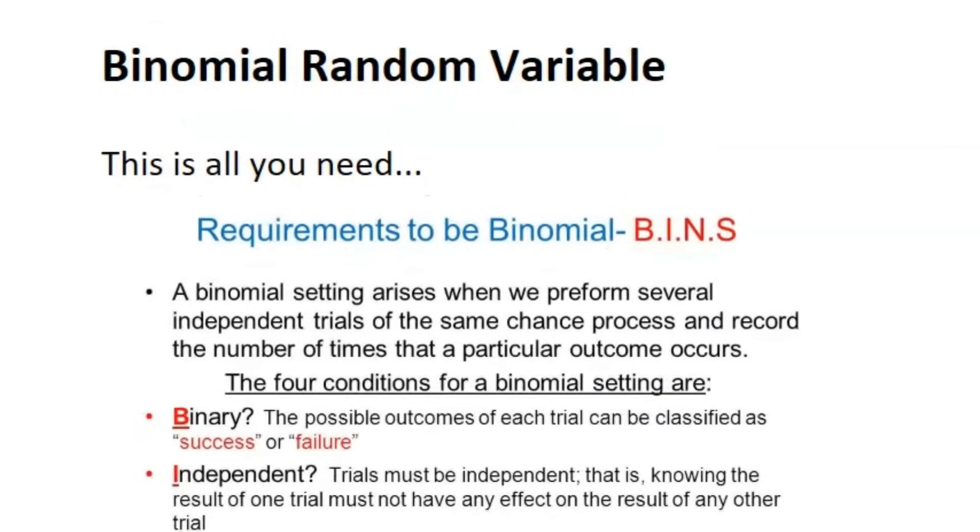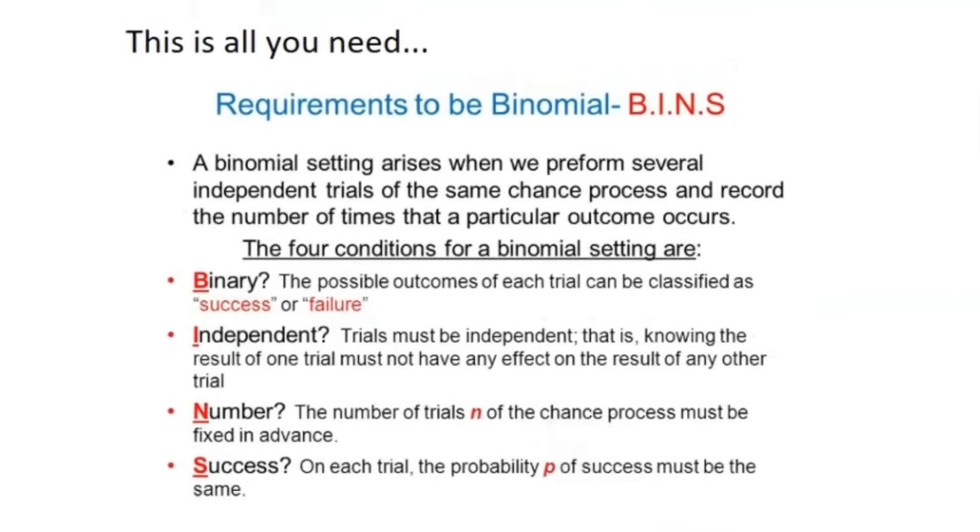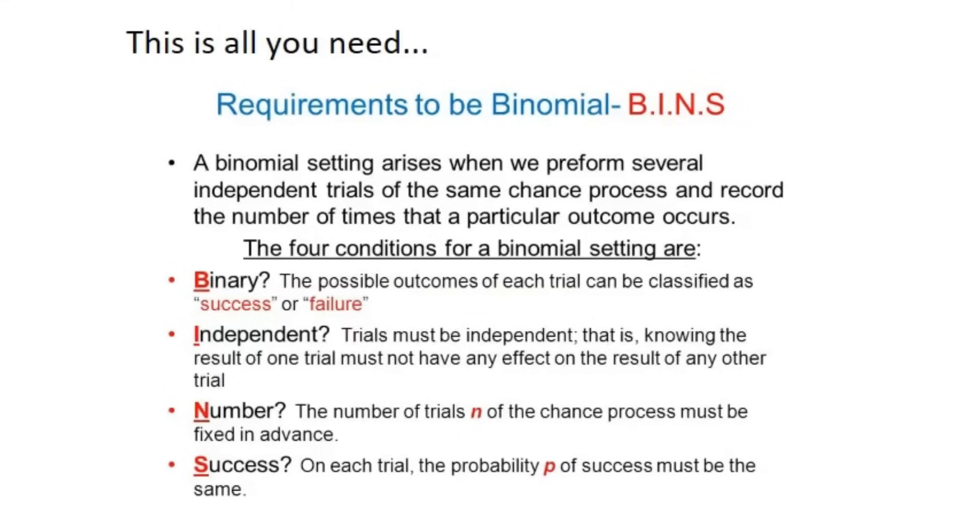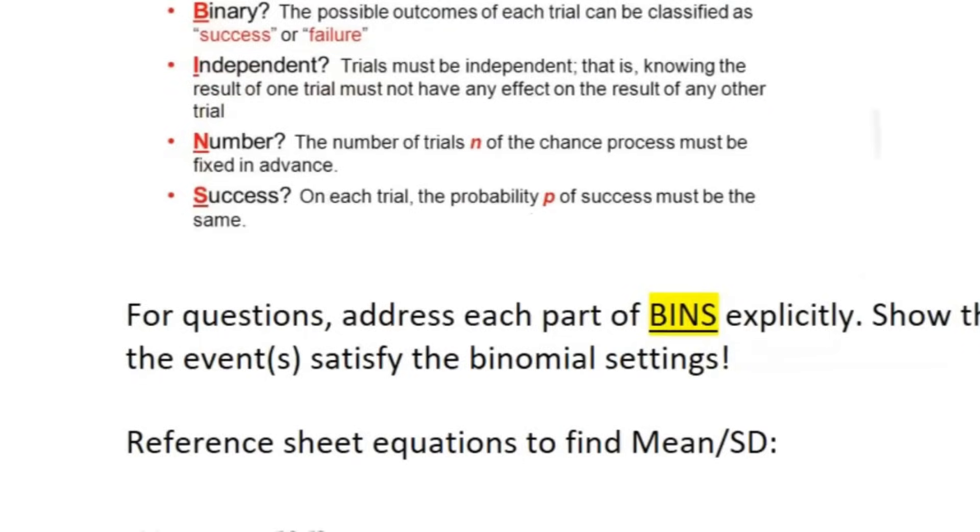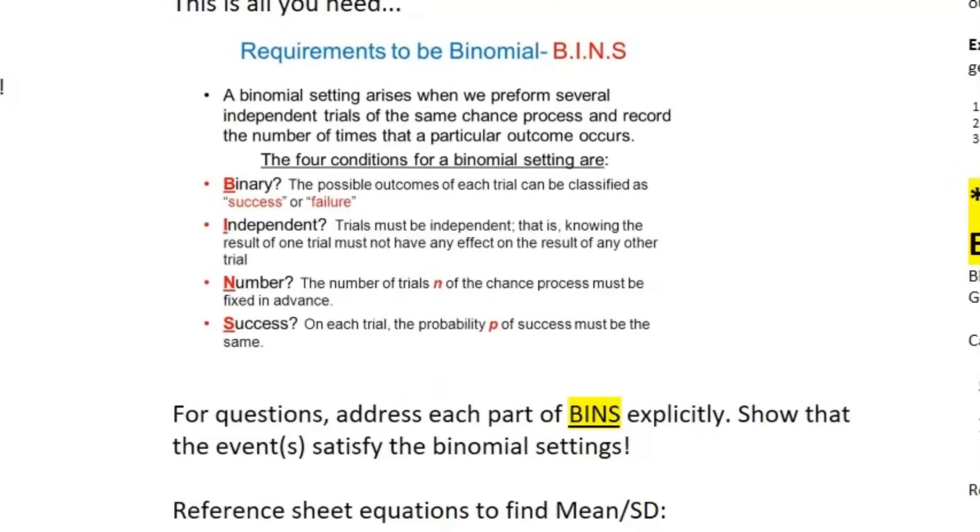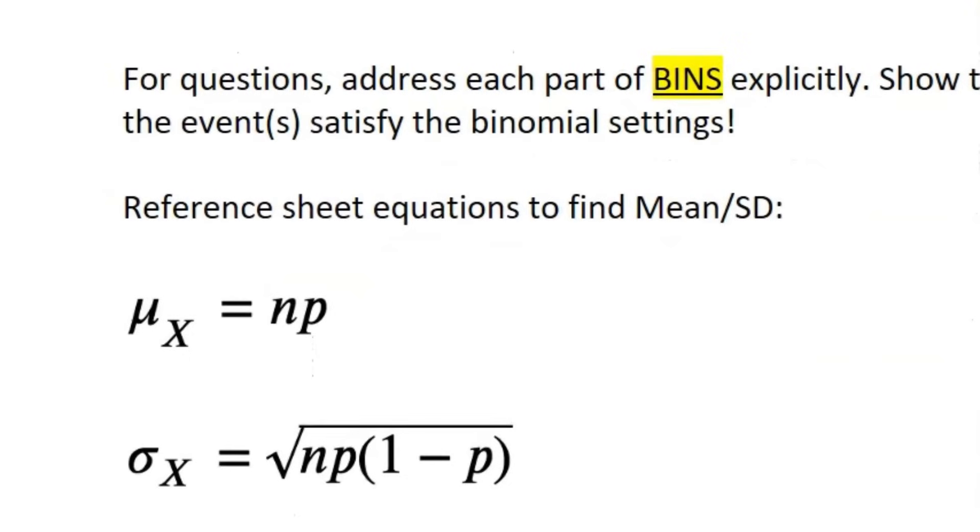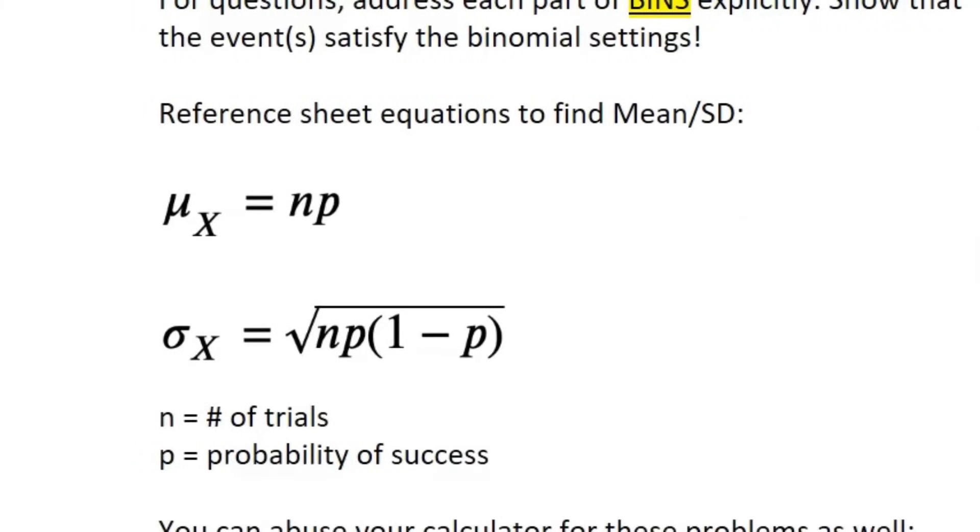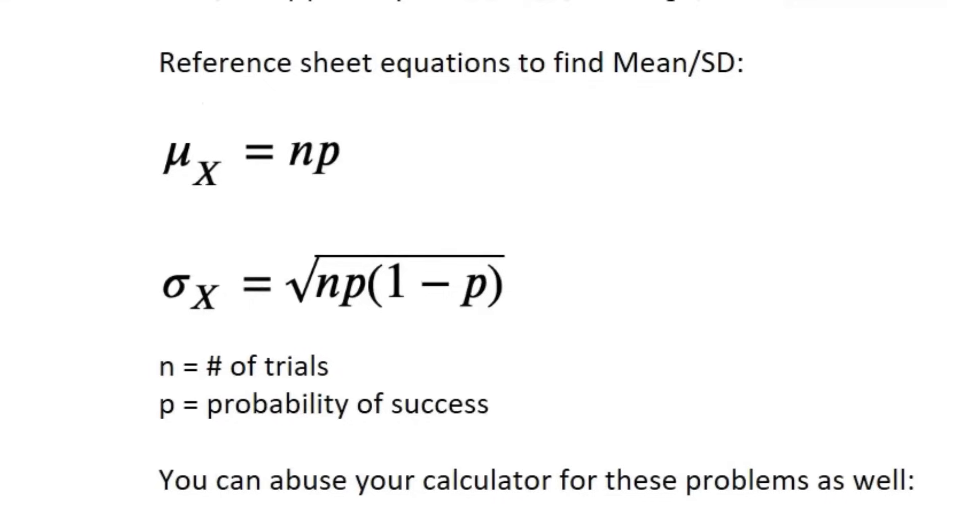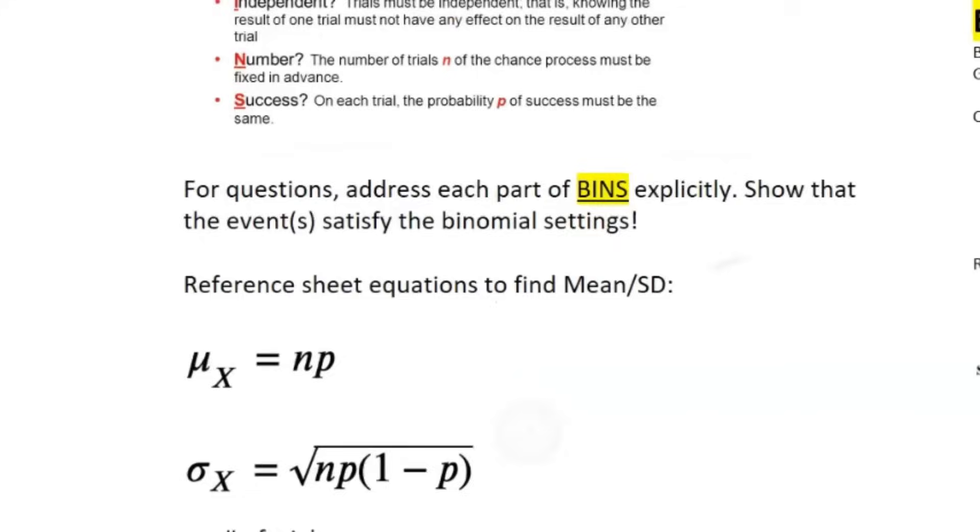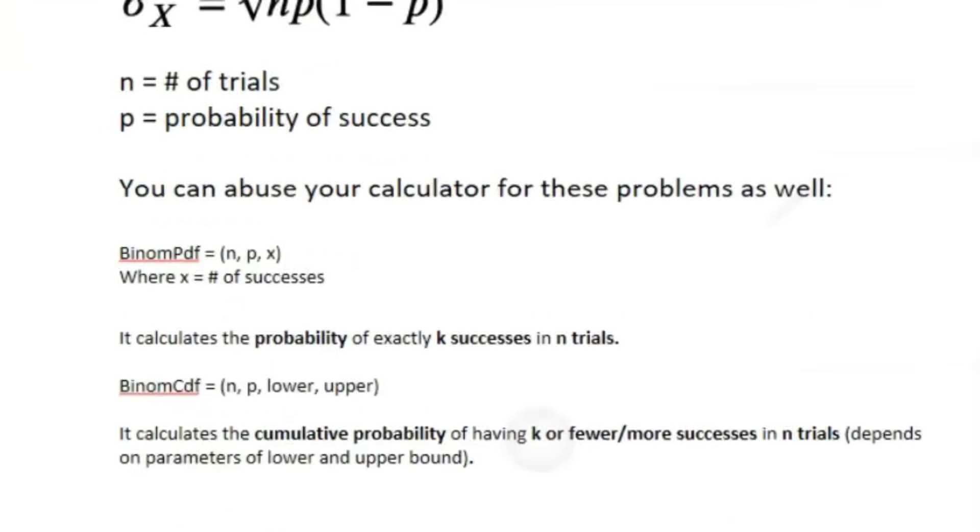So now we're going to move on to binomial random variables. And I'm going to tell you this is all you need. You need to know the acronym BINS. First off, is it binary? Does it satisfy the binary? There has to be success and there has to be a failure. Are the trials independent? Is there a fixed number of trials? And is there a set probability of success for each trial? So make sure for questions, you address each part of BINS, B-I-N-S, explicitly and show that the events satisfy the binomial settings to prove that it's actually a binomial random variable. For the mean and standard deviation, these are on your reference sheet. We have the mean and the standard deviation where N equals the number of trials and P equals the probability of success. And I would say you can always abuse the calculator for these problems as well if you're asked about binomial random variables.